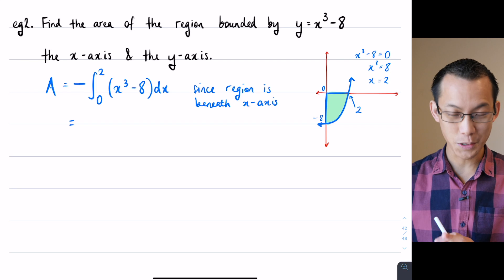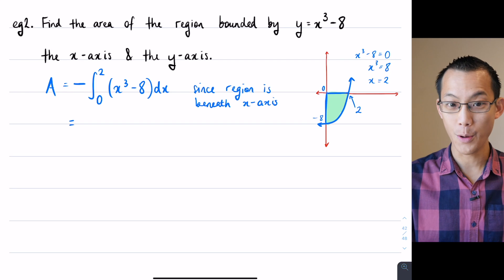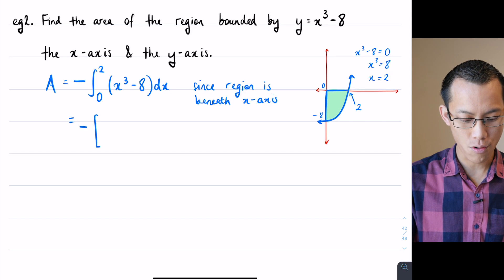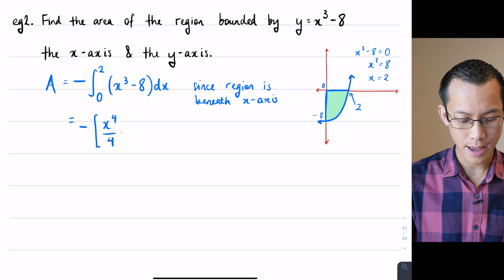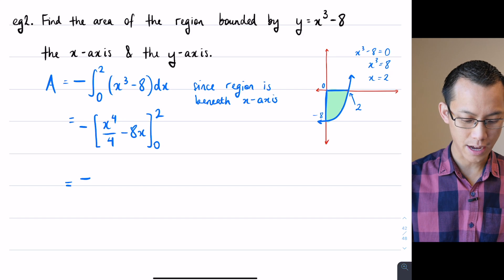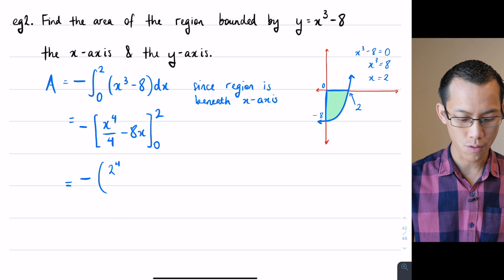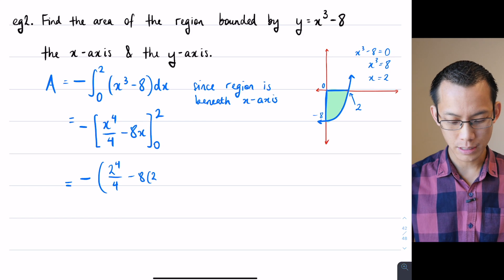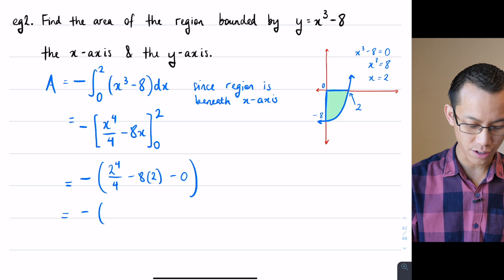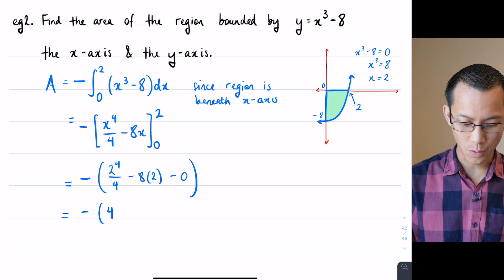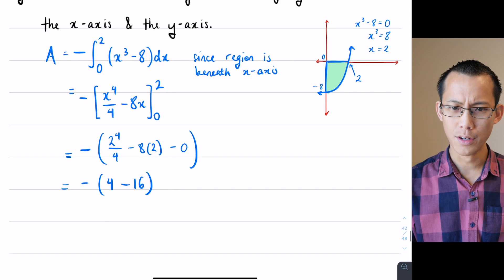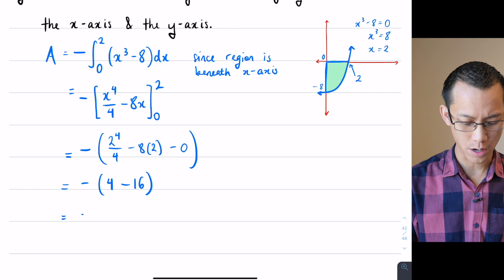Alright so sketch done, identify the integral, at this point you've probably been looking at working thinking I know what to do with this so maybe you guys can help me catch up. I've got the minus sign out the front, I've got an x to the 4 on 4 take away 8x, then you've got a 0 and a 2 there, minus sign stays out the front and then I'm going to start evaluating so I've got 2 to the 4 on 4 minus 8 lots of 2, take away 0, minus sign again 2 to the power of 4 is 16 so 16 on 4 is going to be 4, take away 8 times 2 is 16 and so I've got a negative 12 on the inside of the bracket so that's negative of negative 12 so I'm getting 12.